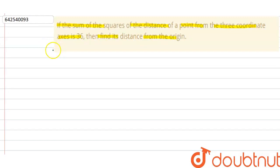Now, let's say the point is P and distance from x-axis is X, distance from y-axis is Y, and distance from z-axis is Z.